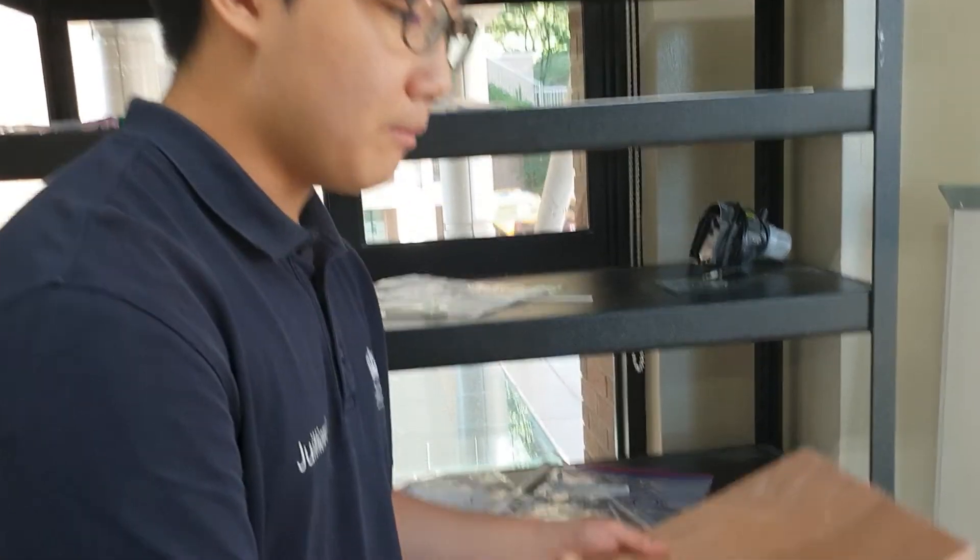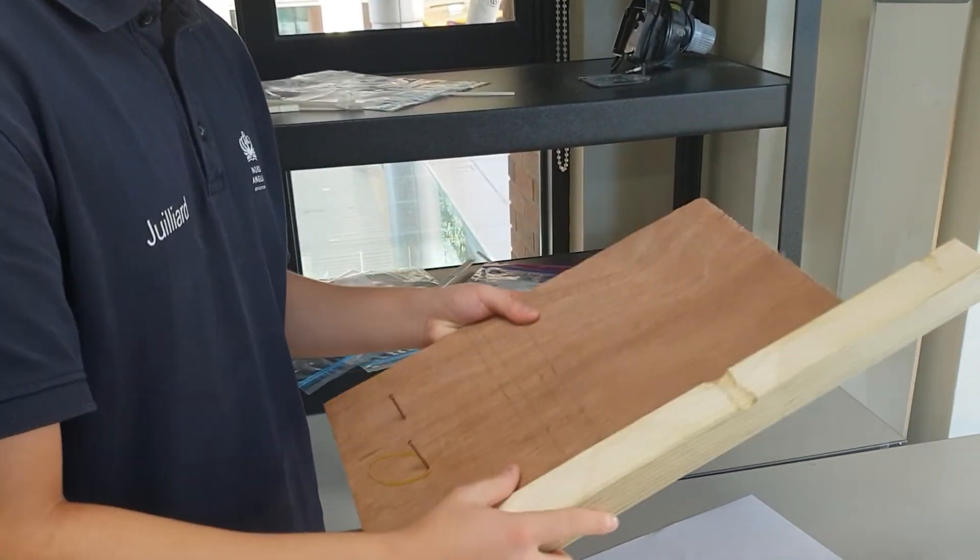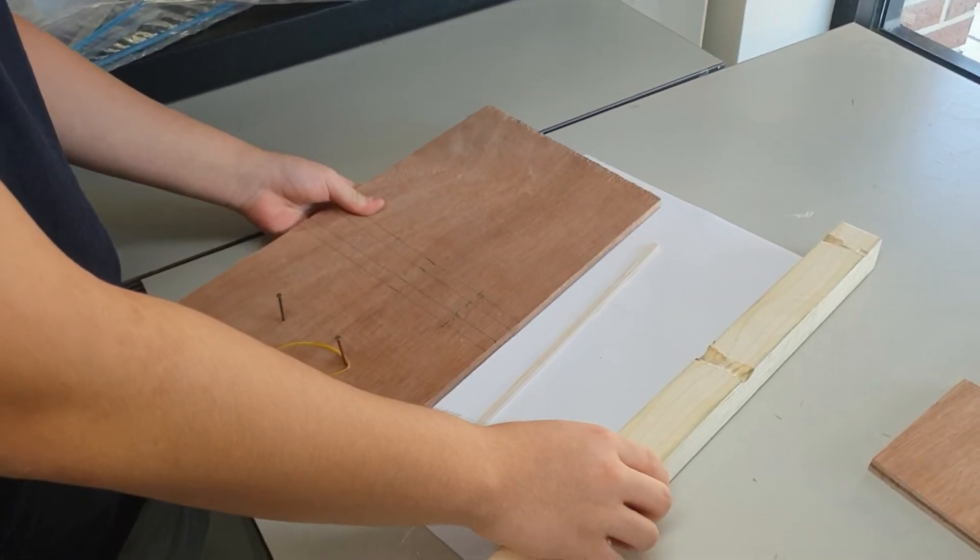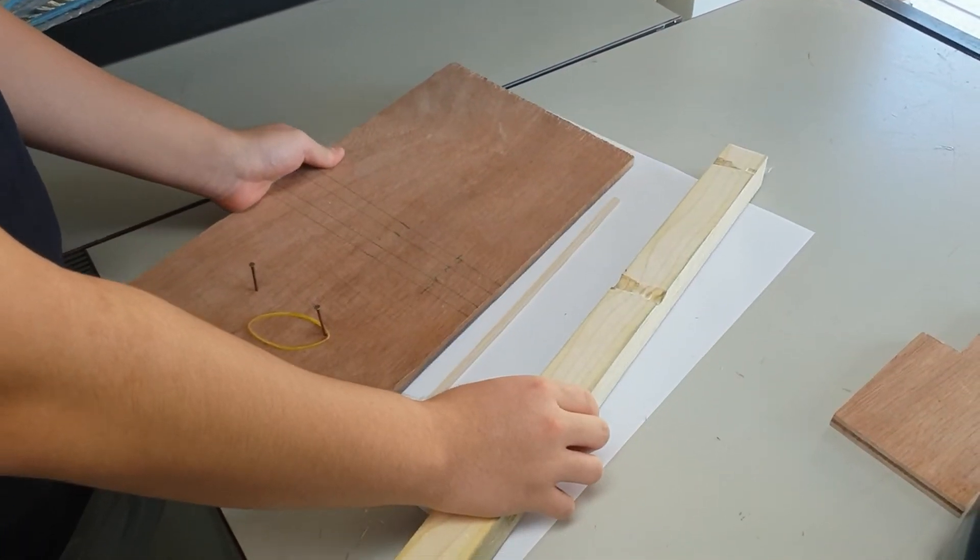And you always have to remember that both sides need to be straight. If it's curved, either your balsa wood will fail to stick together at a certain place, or it will be at an angle which you don't want to have.